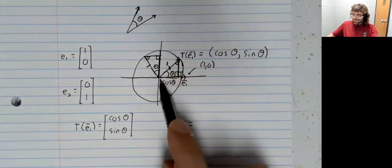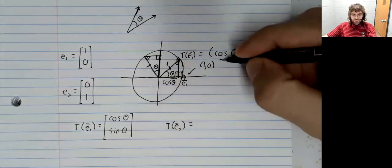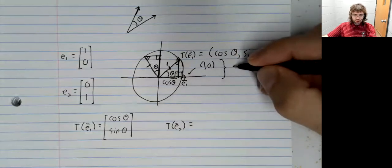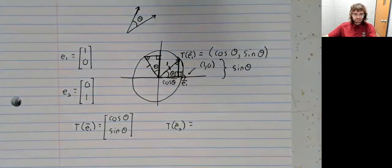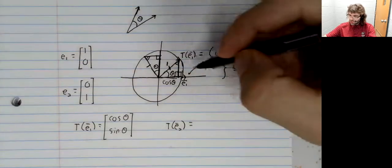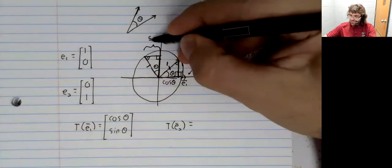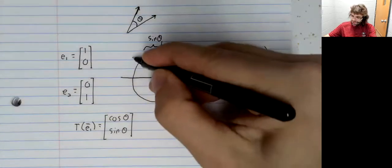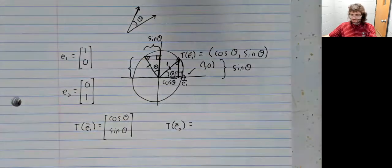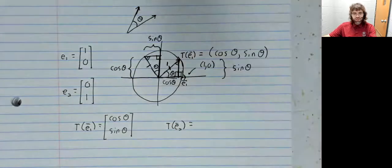Well, this distance is the cosine of theta. And this distance, I'm kind of cramped here, but it's the sine of theta. So this distance is the sine of theta. This vertical distance is the cosine of theta.